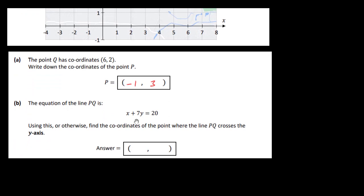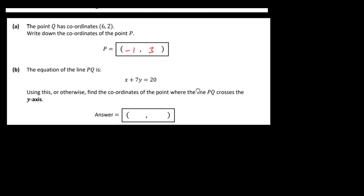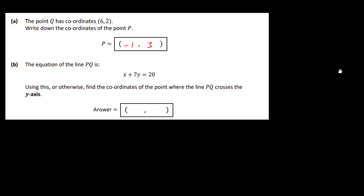The equation of the line PQ is x plus 7y equals 20. Using this or otherwise, find the coordinates of the point where PQ crosses the y-axis. So this is the line PQ here and we were given the equation x plus 7y equals 20. All the way up along the y-axis here you've got points, and all of those points have an x-coordinate and a y-coordinate. Now all the points up along the y-axis have an x-coordinate of 0. You're not going out the x-axis left or right, so you're at 0 on the x-axis.